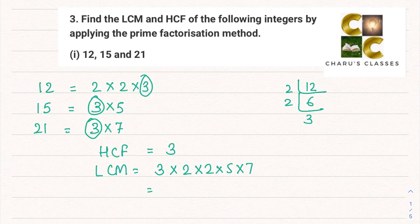So 3 × 2 = 6, two 6s are 12, twelve 5s are 60, and 60 × 7 = 420. So for this particular question, HCF is 3 and LCM is 420.